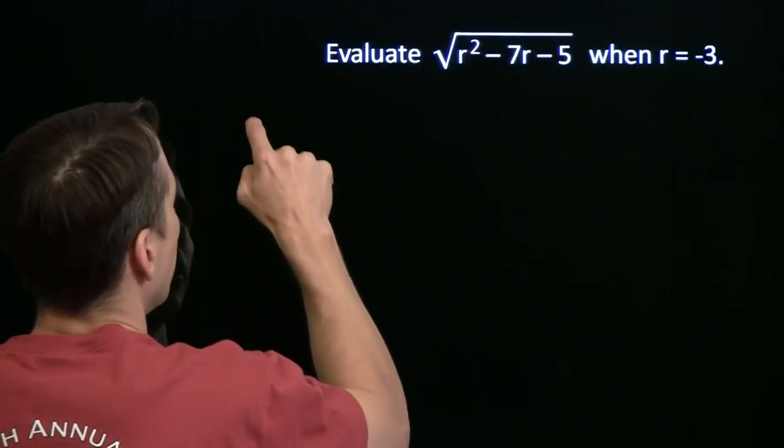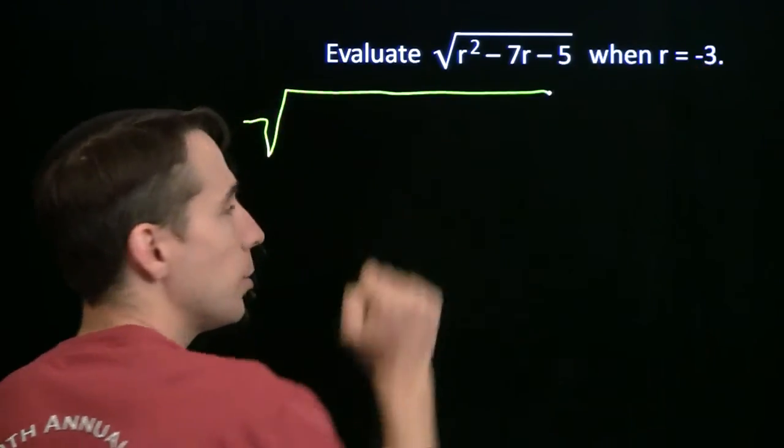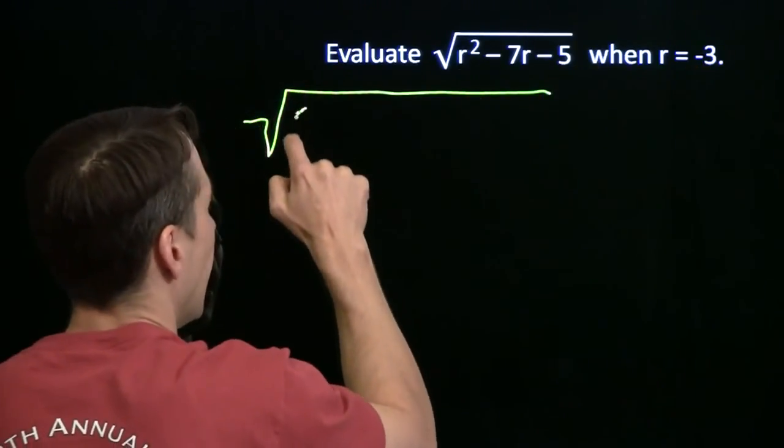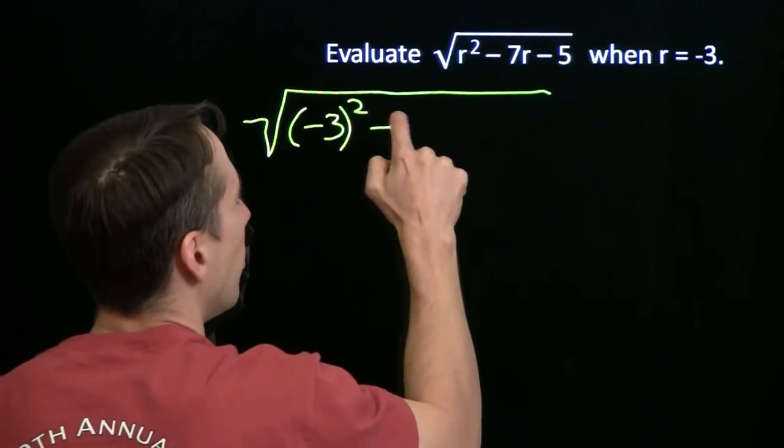Got a square root here. Same thing as before. I just take the value and I substitute it in everywhere the variable is. And still, I remember my parentheses.